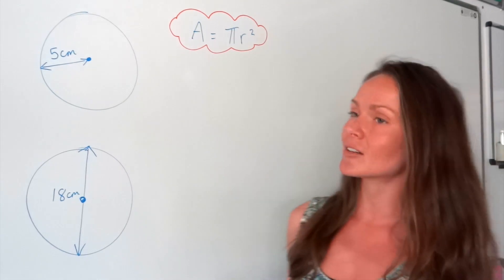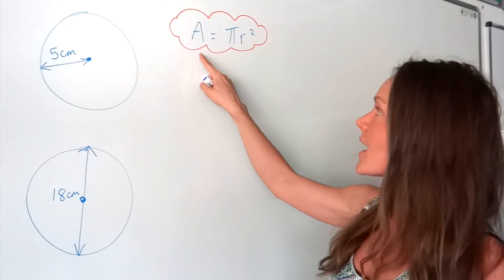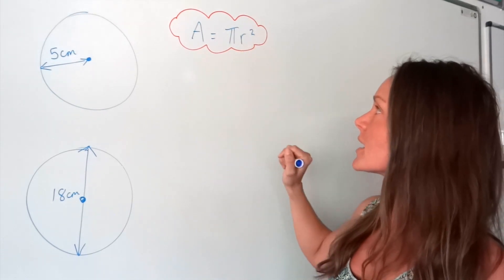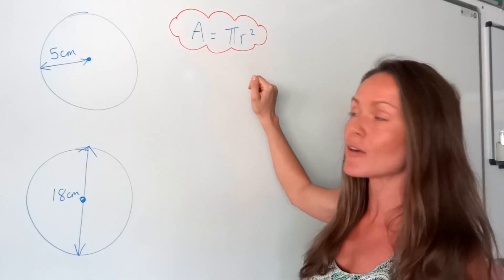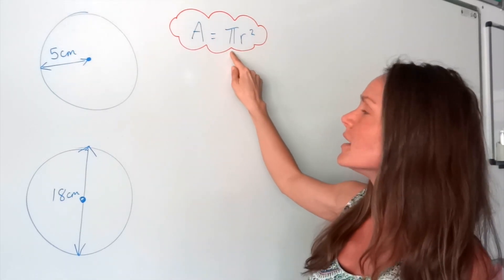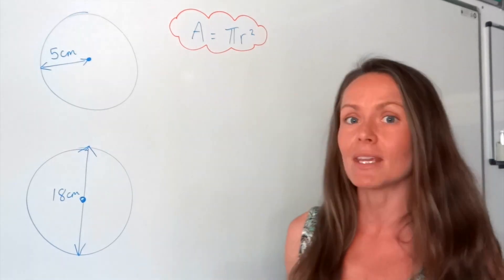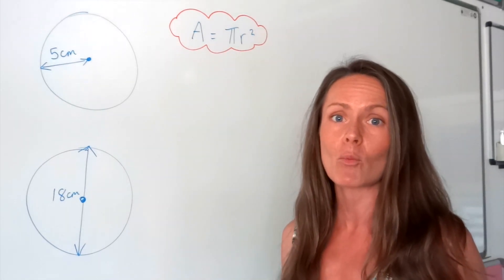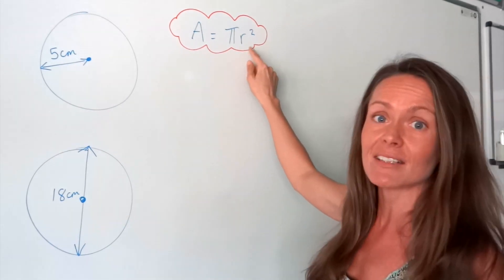So before we get started, the formula to work out the area of a circle is A equals pi r squared. Now, remember when things are grouped together like this, it means they're being multiplied together. So you have to multiply this special number pi, which is an irrational number, and it's approximately equal to 3.142. You have to multiply that number by the radius squared.